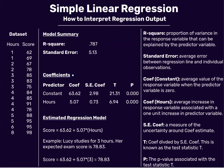Another important output is the coefficients table. When you perform simple linear regression you receive a table with the constant and the predictor variable. The coefficient for the constant represents the average value of the response variable when the predictor variable is 0 — in this case, the average exam score when hours equals 0 is 63.62. The coefficient for hours represents the average increase in the response variable associated with a one-unit increase in the predictor variable — for each additional hour studied, exam score is expected to rise by 5.07 points.